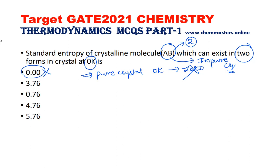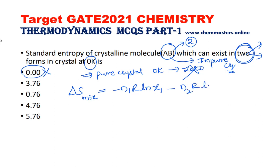For an impure crystal, the entropy must not be zero; it should be something else. Since the crystalline molecule AB exists in two forms, the change in entropy of a mixture is mathematically expressed as: ΔS_mix = −n₁R ln x₁ − n₂R ln x₂, where the first term is for the first form and the second for the second form. Here n indicates number of moles, R is the gas constant, and x is the mole fraction.